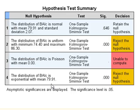Finally, comparing the sample distribution with an exponential distribution — again, reject the null hypothesis. The distribution is not exponential, with a p-value of less than 0.0005.